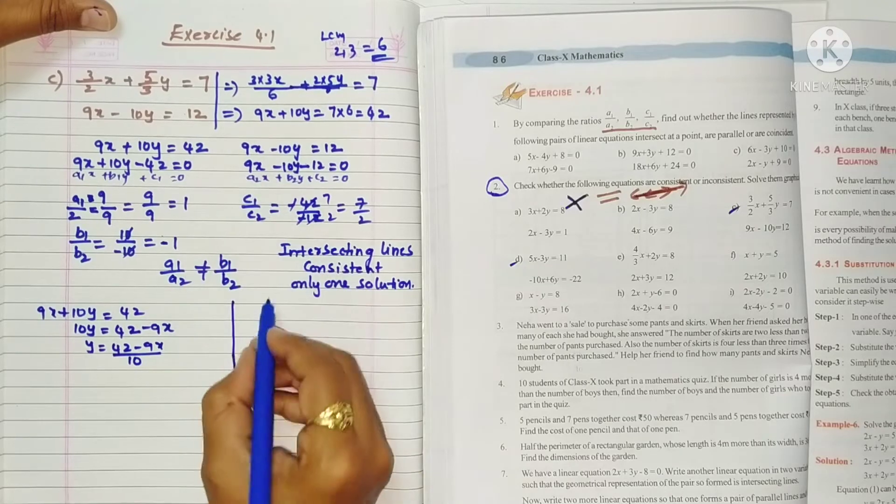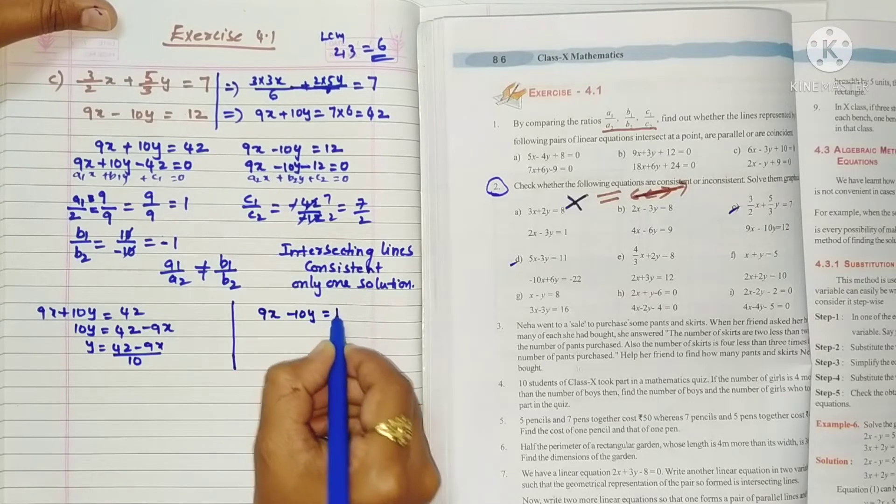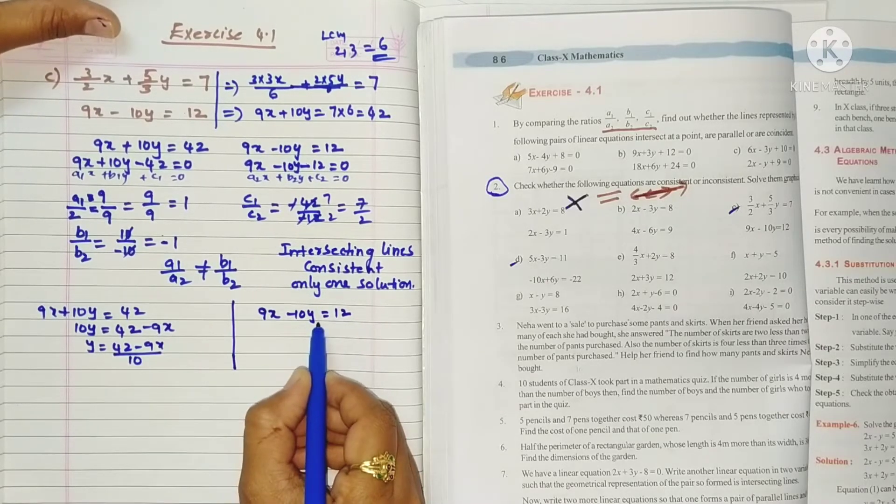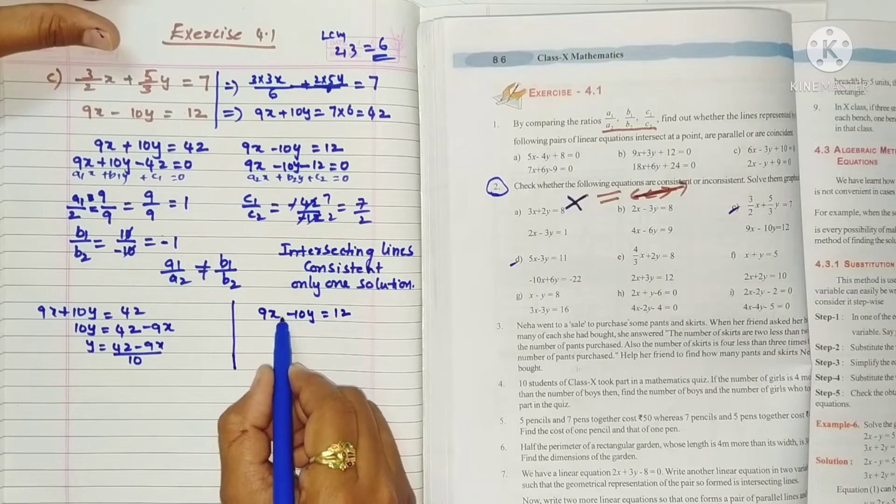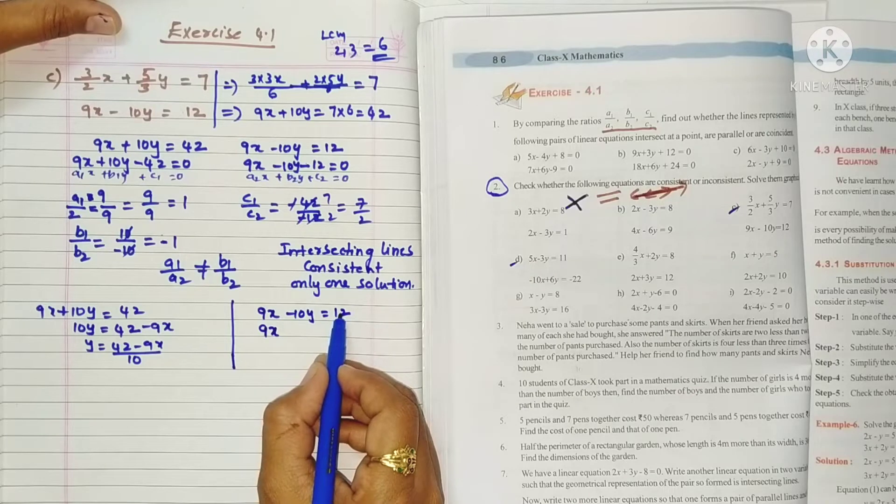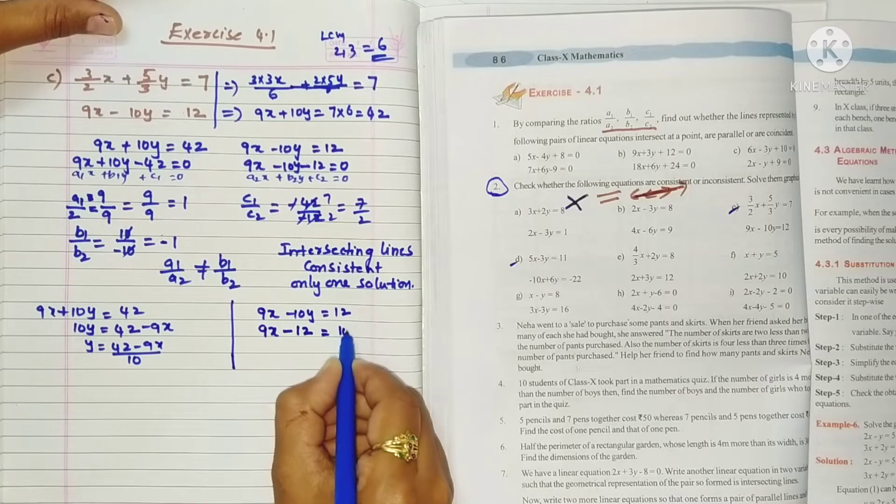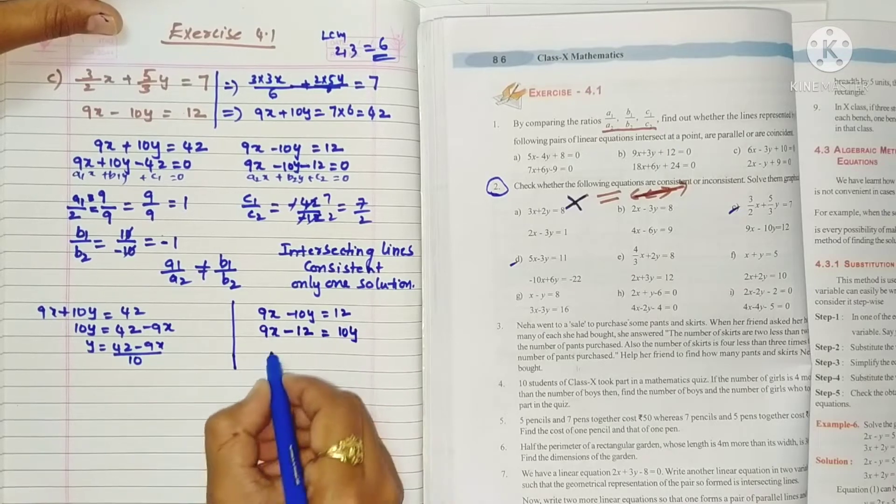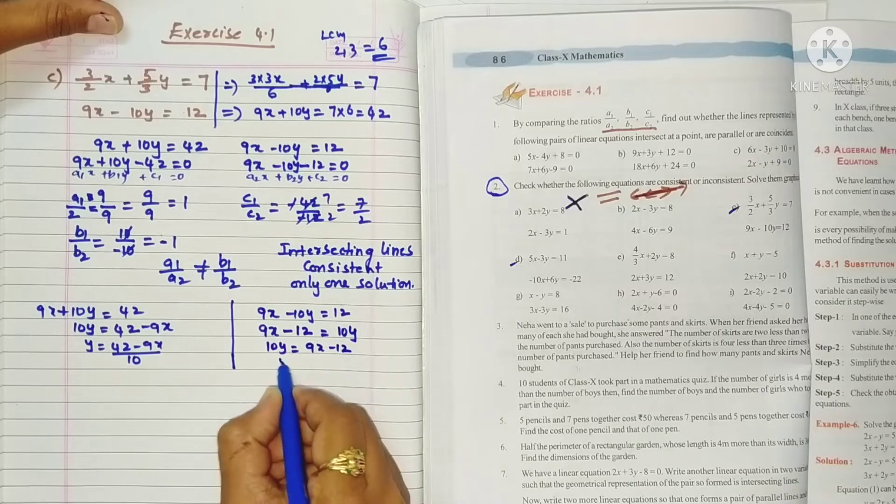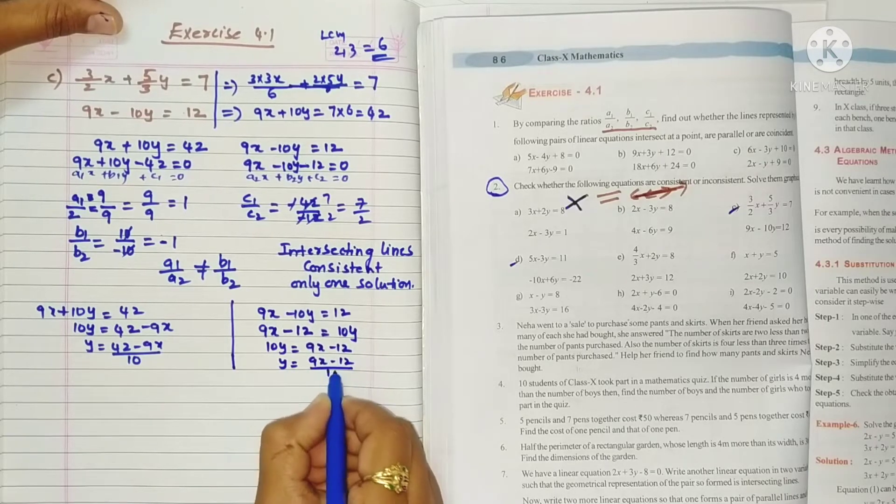Similarly, second equation: 9x minus 10y equals 12. We want to find out the y value. Since there's a minus before y, just transpose to the right side 9x, and if we transpose 12 to this side it becomes minus, equals 10y. So 10y equals 9x minus 12. y equals 9x minus 12 by 10.